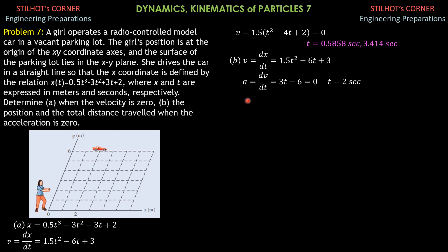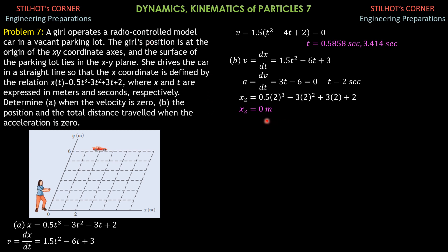We substitute t = 2 seconds into the position equation to determine the position of the radio-controlled model car when acceleration is zero. Calling it x₂: x₂ = 0.5(2)³ minus 3(2)² plus 3(2) plus 2 = 4 minus 12 plus 6 plus 2 = 0. So the position of the car when acceleration is 0 is x₂ = 0, which is on the y-axis.